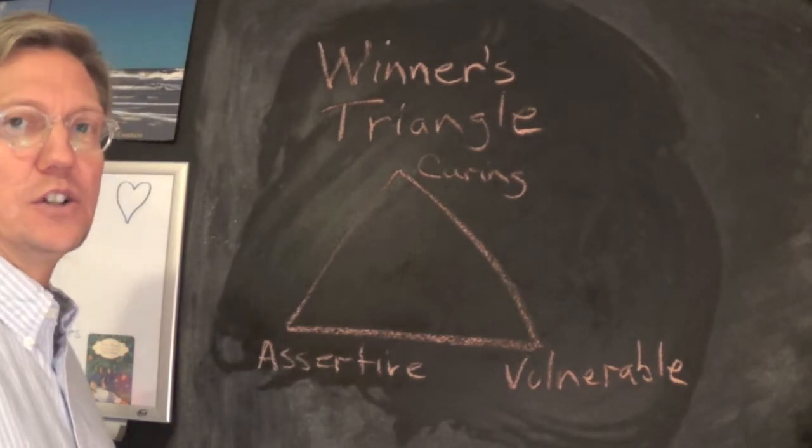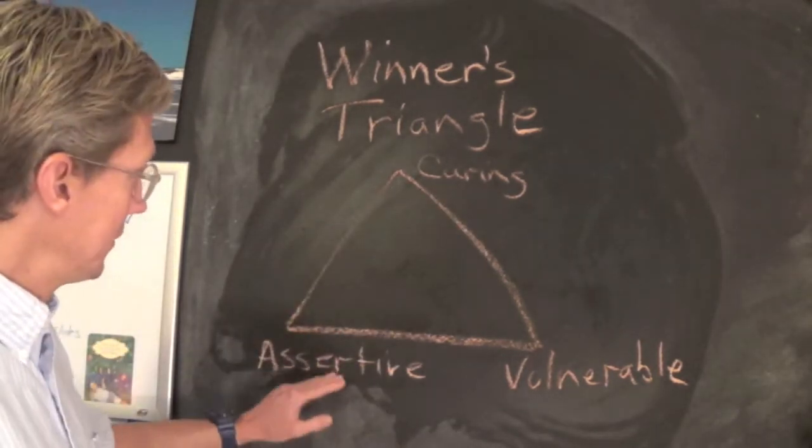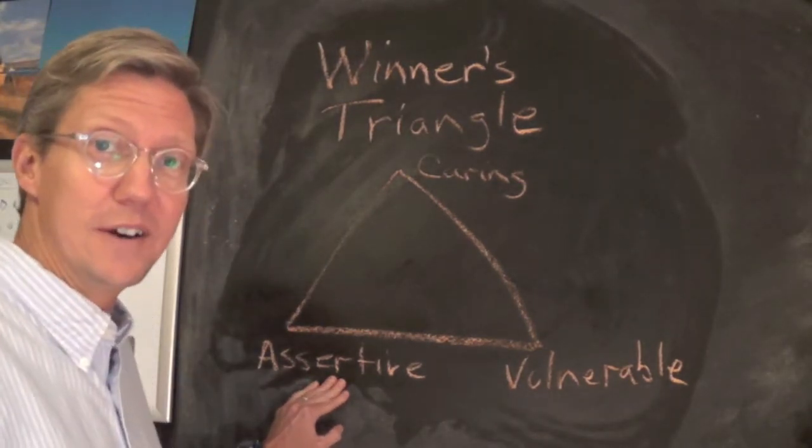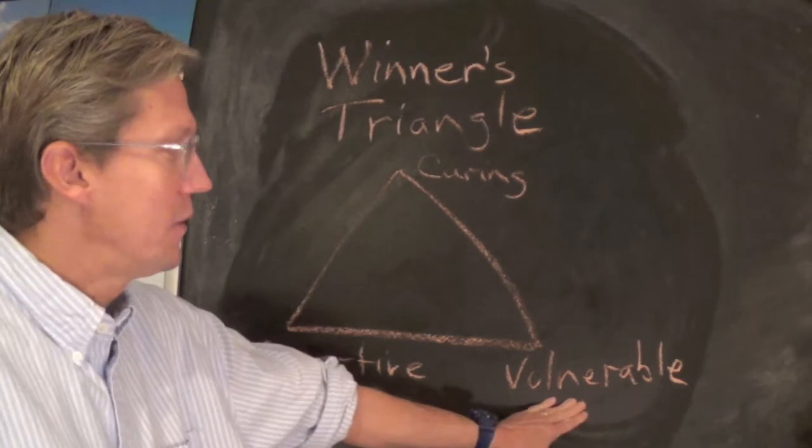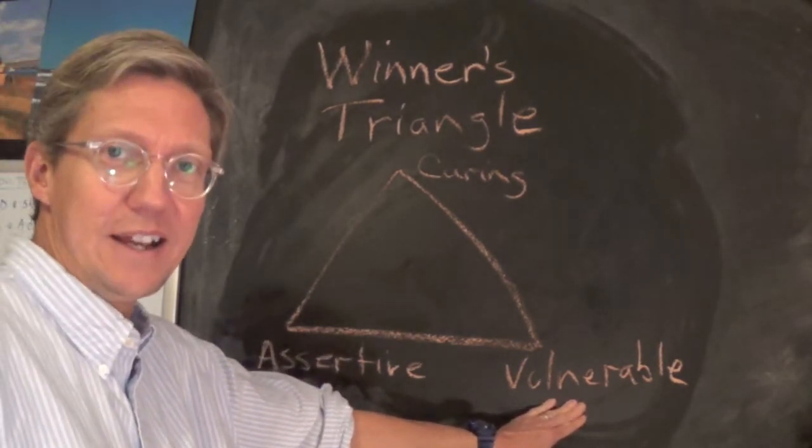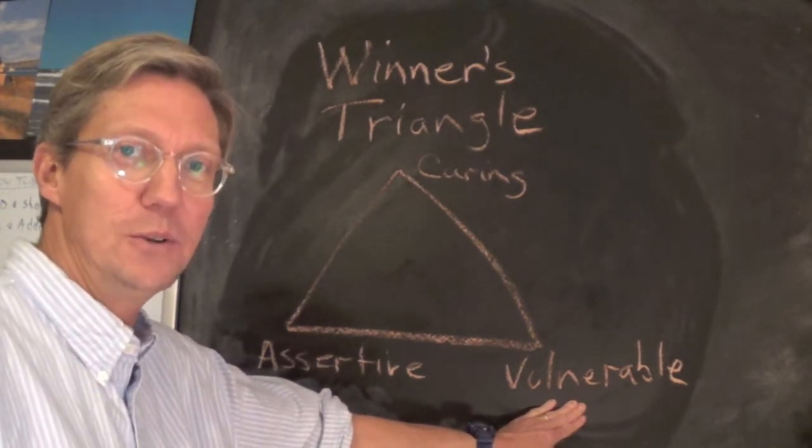When we really are in a genuine relationship, we're caring towards others, we're assertive - we're neither passive nor aggressive but we assert to make sure we get our needs met - and we allow ourselves to be vulnerable. We recognize that we don't know everything, that we're not perfect at everything, that we make mistakes, and we're human.